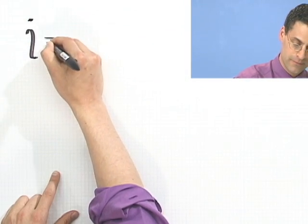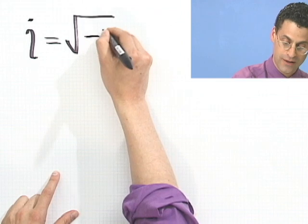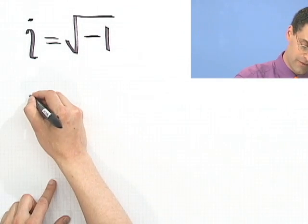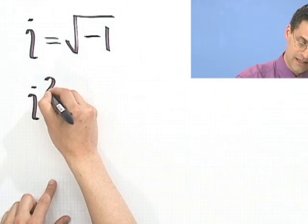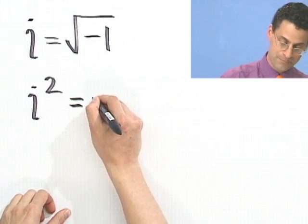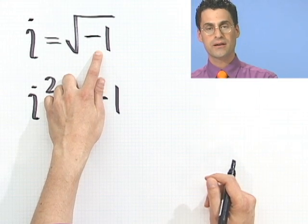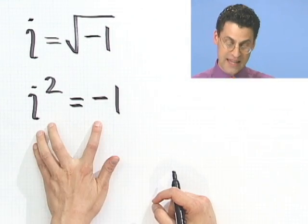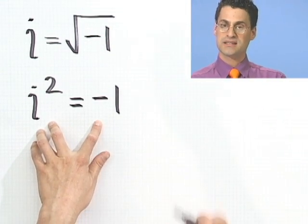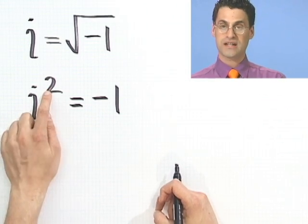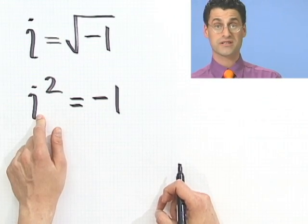Some people might be taken aback and annoyed by the fact that you could take an imaginary number, like i, the square root of minus 1, and just square it and all of a sudden it becomes a real number. Some people may say that's nonsense. The reality is that while i itself is an imaginary number, it's imaginary because it satisfies this property — it's some imaginary number such that its square turns out to be negative 1, because no real number satisfies that.